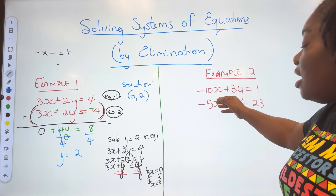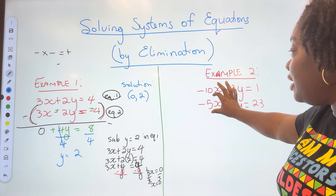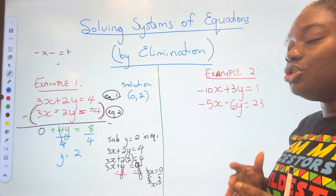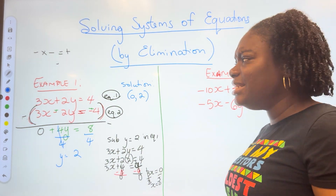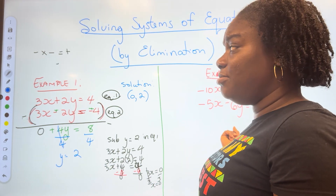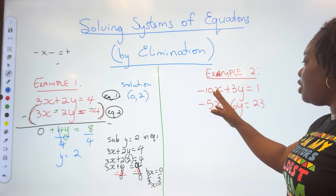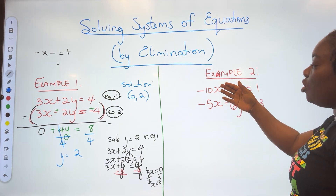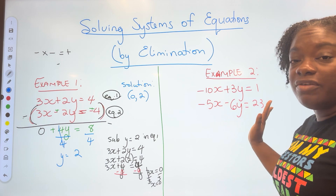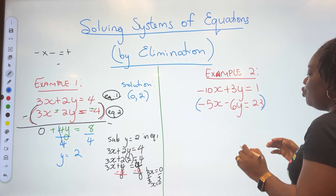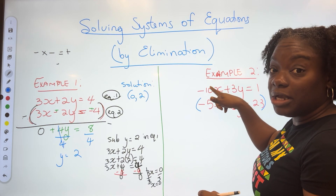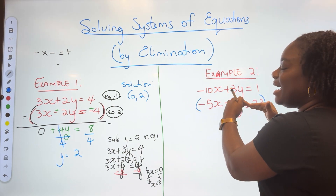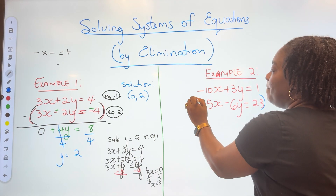Now let's look at example two. In example two, none of the coefficients are the same — the coefficients for x are not the same, and the coefficients for y are not the same. So we'll have to do a little bit more work. We need to get one variable to have the same coefficient, and I'm going to choose to multiply one equation to match the x coefficients.